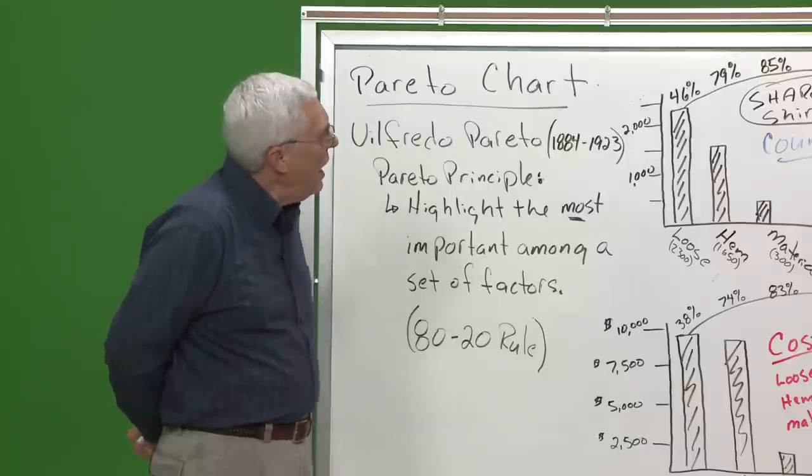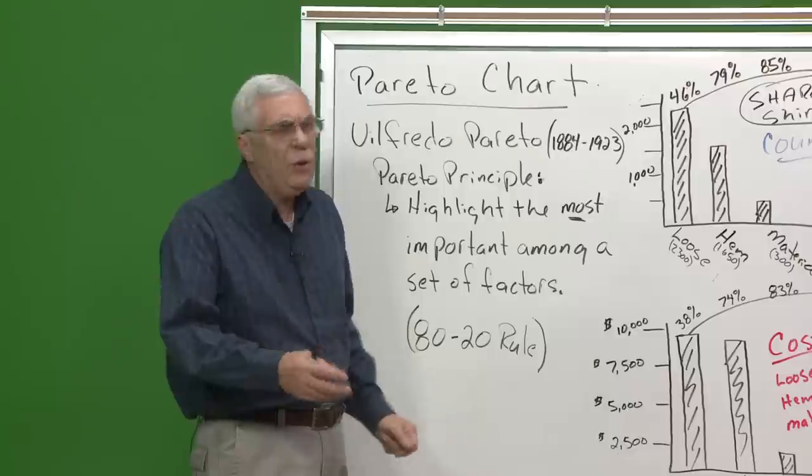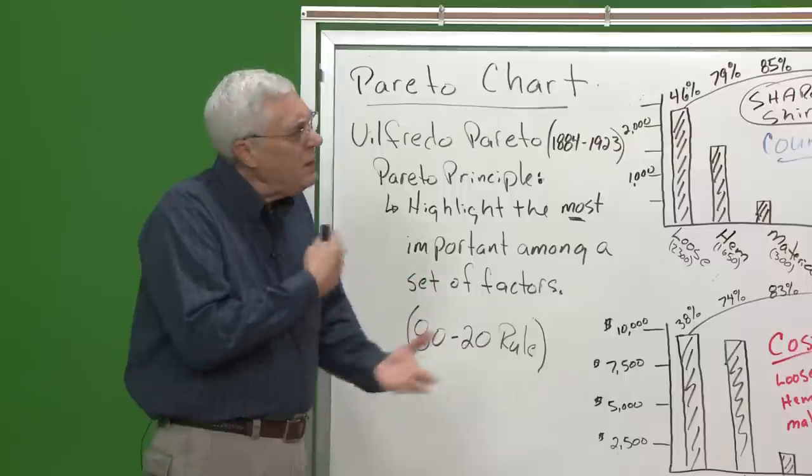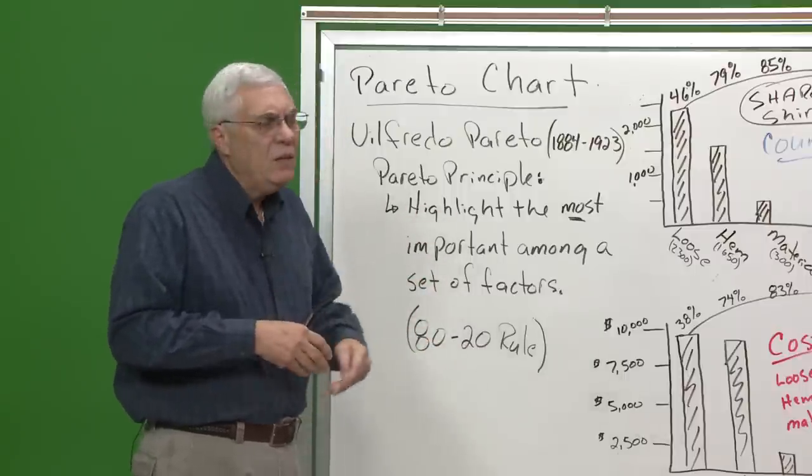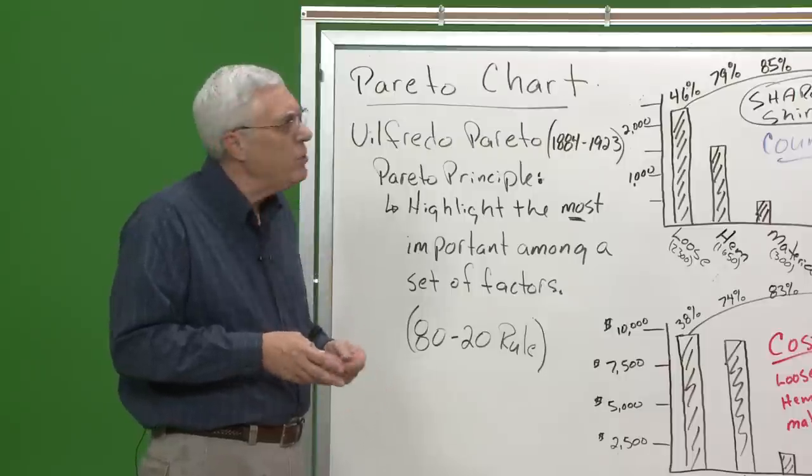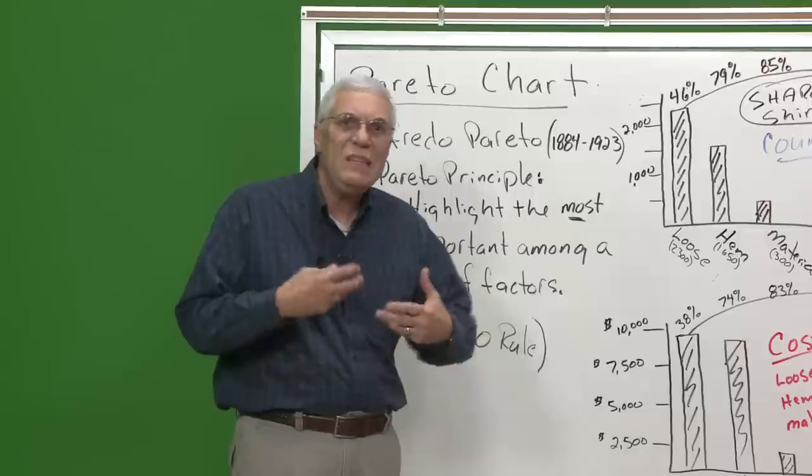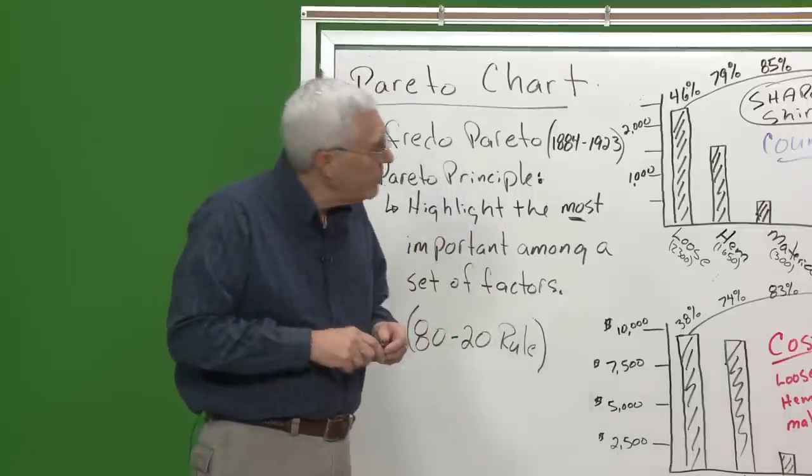It seems to be a pretty common situation. Now granted, 80-20 is a rough number, it could be 70-30, but it always seems to be back to, I think Duran reset it best, the significant few and the trivial many. And what we want to do is when we're trying to solve quality issues, we want to identify what those significant few are, because that's where our attention needs to go.